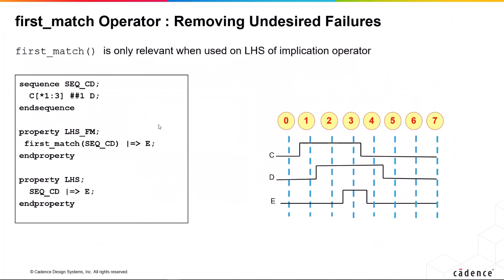So let's see why people actually use this and think it's useful. We've got the same code here, basically, other than what we've done with this property. We've swapped the left-hand side for the right-hand side in terms of where we use first match. The only place first match could be useful is on the left-hand side of an implication. We've got two properties here which are the same, apart from this one uses first match and this one doesn't. If we have one C followed by D, both properties are now enabled, because they've got the same sequence on the left-hand side.